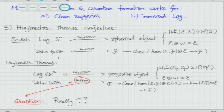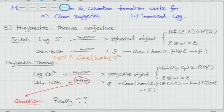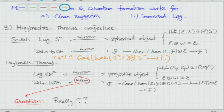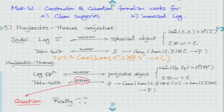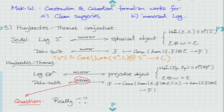So the Dehn twist tau_S^n L is quasi-isomorphic to the cone of Hom(S^n, L) tensor S^n to L. This is one way to interpret Seidel's result: the Lagrangian sphere is the mirror of a spherical object. Huybrechts and Thomas then considered the following question: the Lagrangian Dehn twist can be defined for any Lagrangian submanifold which admits a metric where all geodesics are closed and the length spectrum is rational.